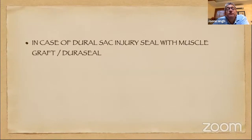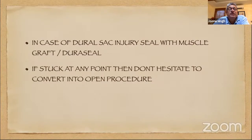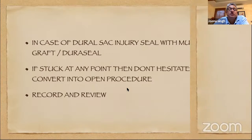The main complications include dural sac injury — managed by muscle graft or dural sac plug. If you are not able to visualize clearly, have a red-out, or cannot access the fragments you want, do not hesitate to convert to open surgery — ego is not at stake. Always record and review your cases, finding where things went well and where improvement is needed. Do not hesitate to review with colleagues, superiors, or seniors who can guide you.